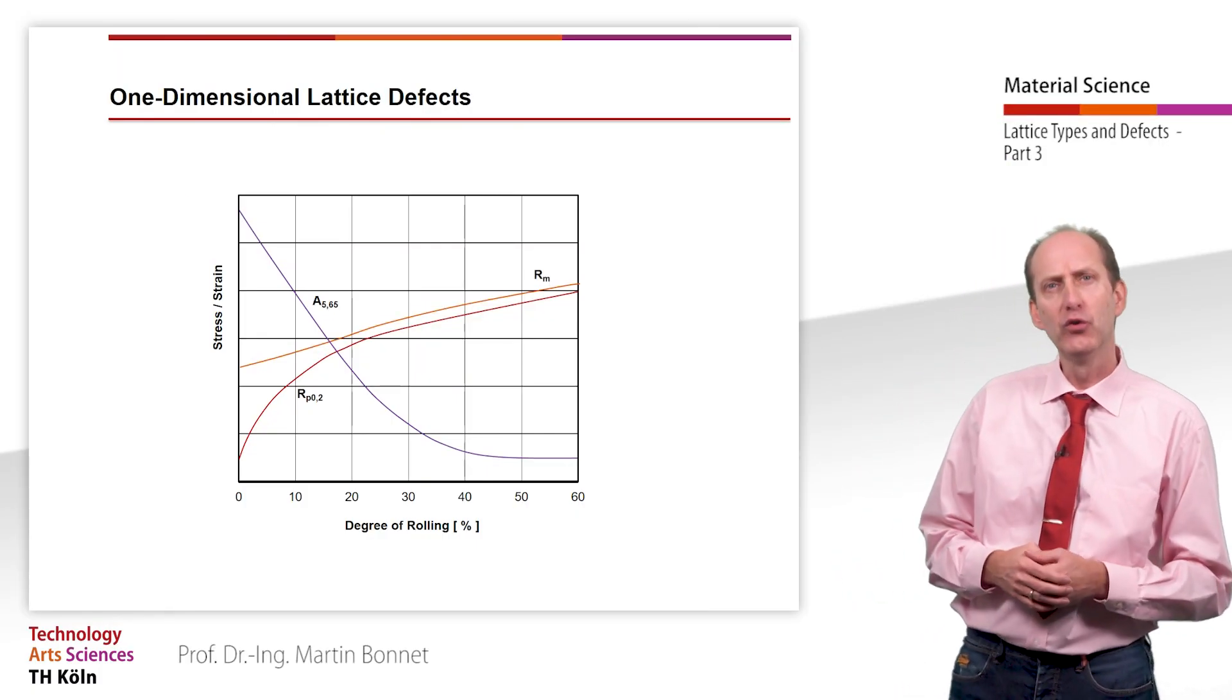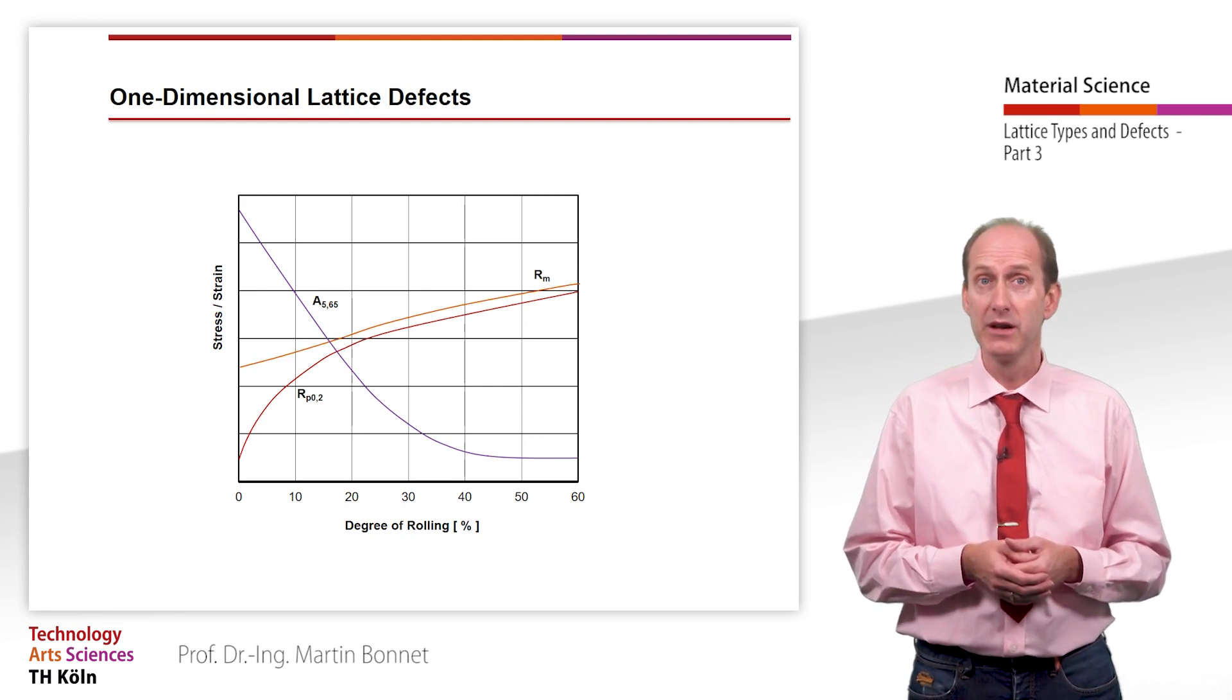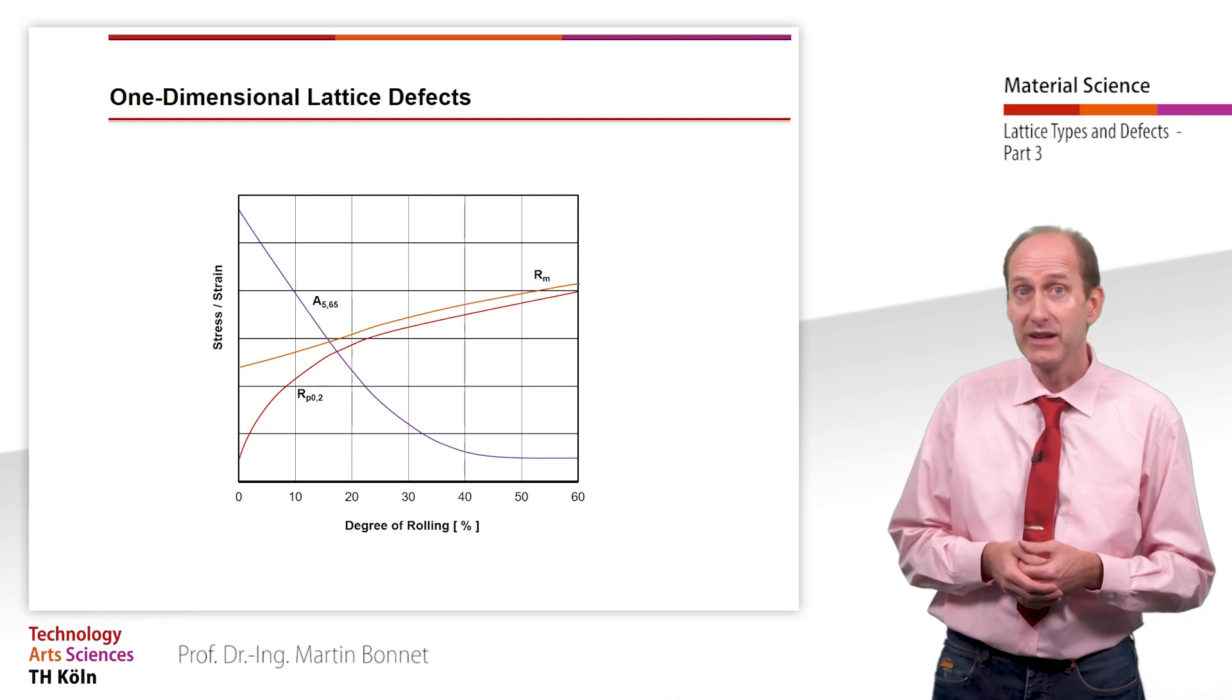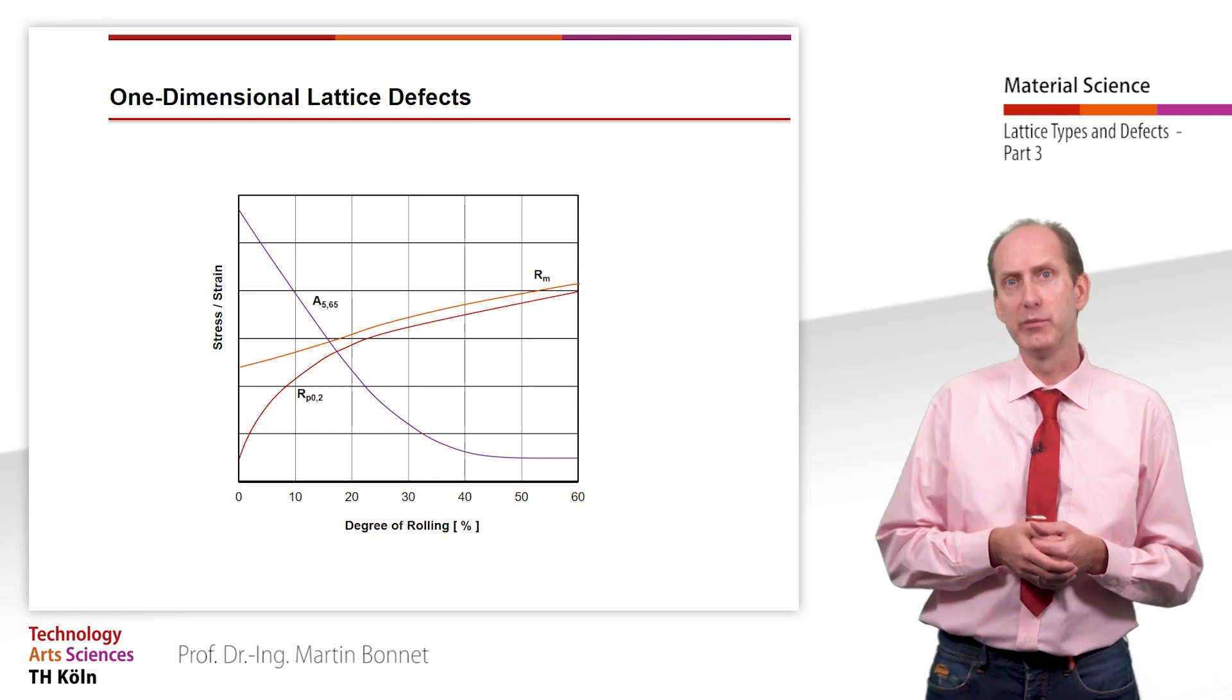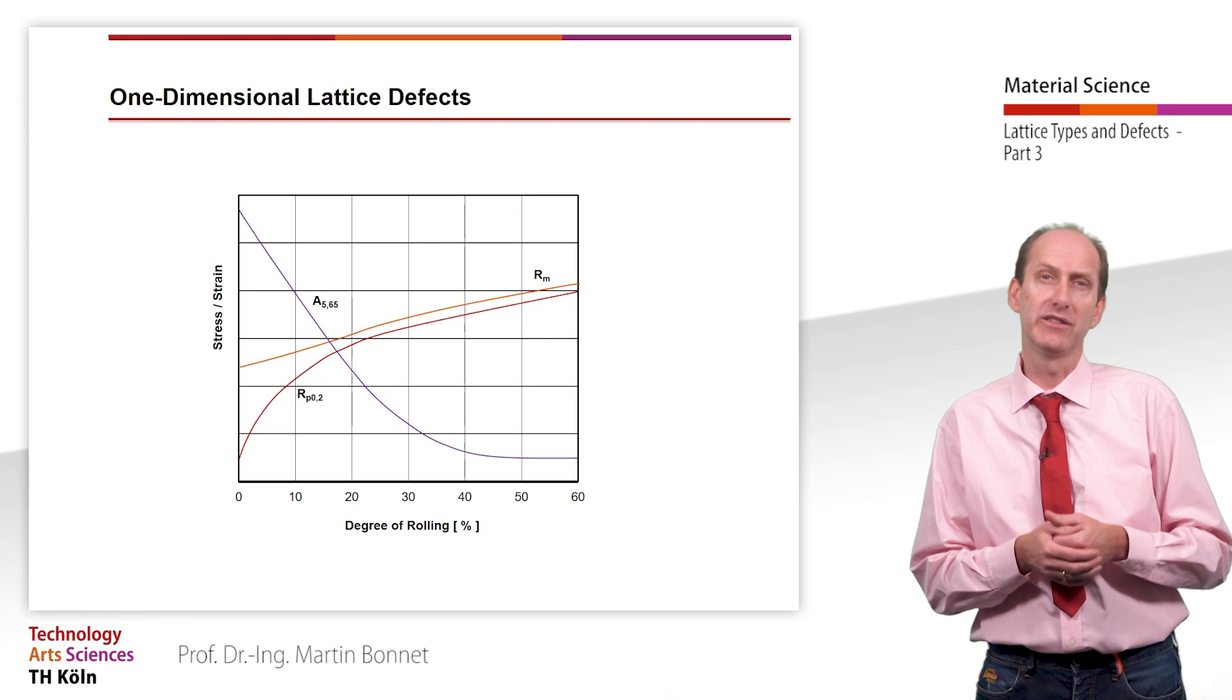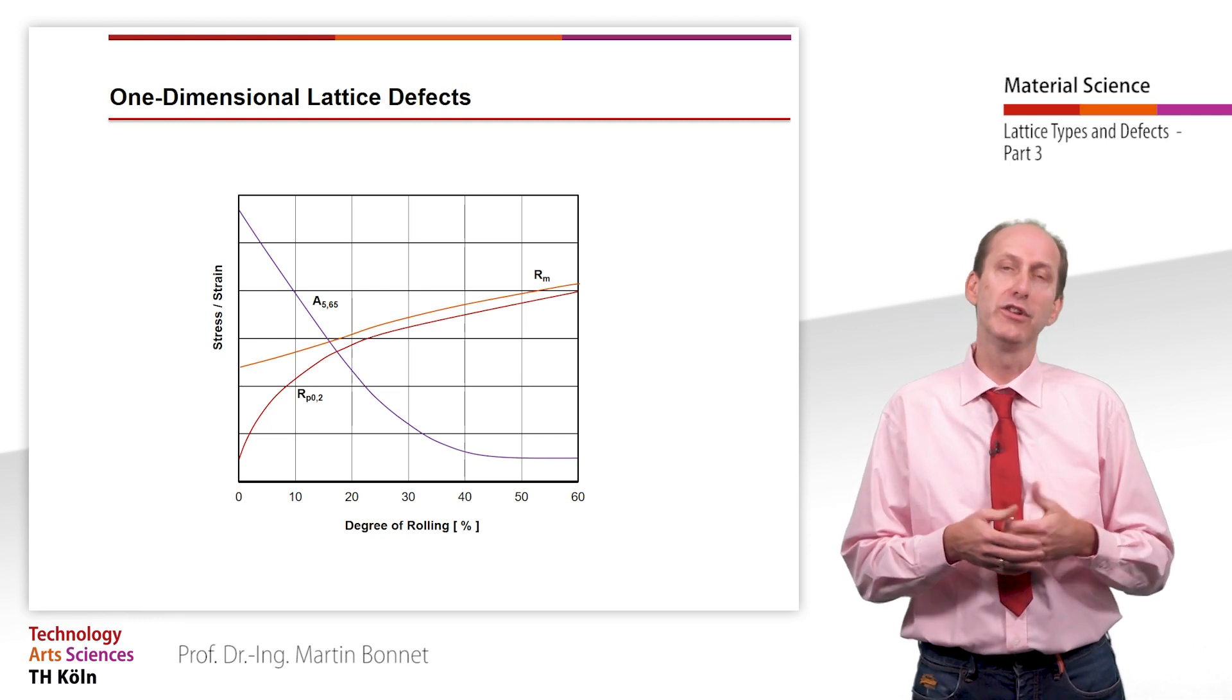This figure shows that during the increase in the degree of rolling the yield strength RP 0.2 and the tensile strength RM increase, while the elongation simultaneously decreases, here A5.65. This means that the material is hardening while at the same time becoming brittle. Since the elastic deformability is primarily influenced by the bonding force of a respective metallic bond and less by the dislocation density, the modulus of elasticity E also does not significantly depend on the degree of deformability.